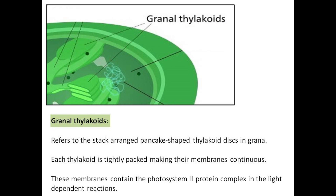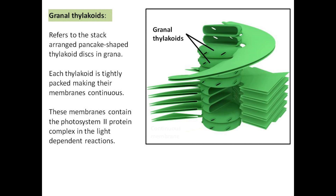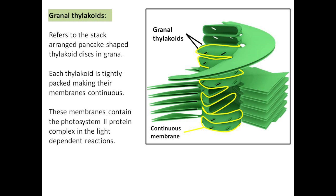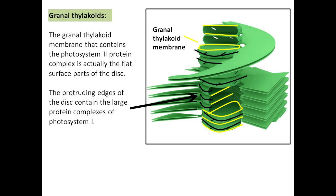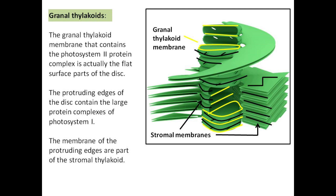Grana refers to the stack-arranged, pancake-shaped thylakoid discs. Each thylakoid is tightly packed, making their membranes continuous. These membranes contain the photosystem II protein complex in the light-dependent reactions. The grana-thylakoid membrane that contains the photosystem II protein complex is the flat surface parts of the disc. The protruding edges of the disc contain the large protein complexes of photosystem I.